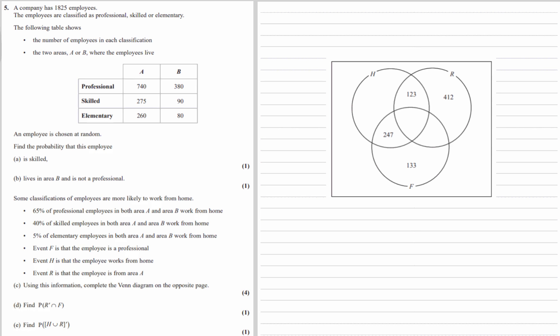The company has 1,825 employees. The employees are classified as professional, skilled or elementary. The following table shows the number of employees in each classification and the two areas A or B where the employees live. If an employee is chosen at random, find the probability that this employee is skilled for part A.